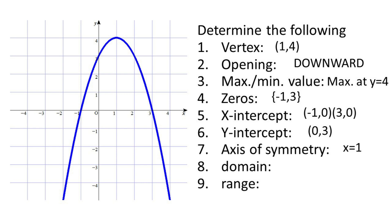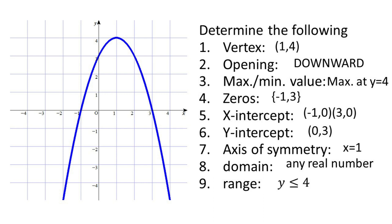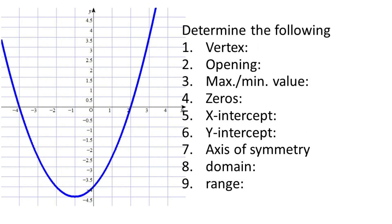Now let's identify the domain. In the graph, the domain is any real number. For the range, as you can see, values of Y greater than 4 will not satisfy the function — the graph will not pass through points greater than 4. Therefore, our range will be Y less than or equal to 4.